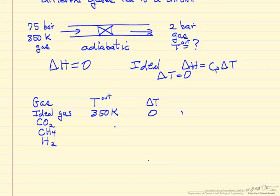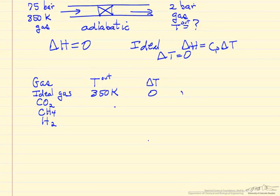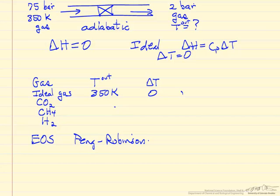For a real gas, its enthalpy depends on pressure. This dependence we can calculate from an equation of state. What we're going to do here is use an equation of state, namely the Peng-Robinson equation of state, and use that to calculate the temperature change, accounting for the fact that enthalpy is a function of pressure.